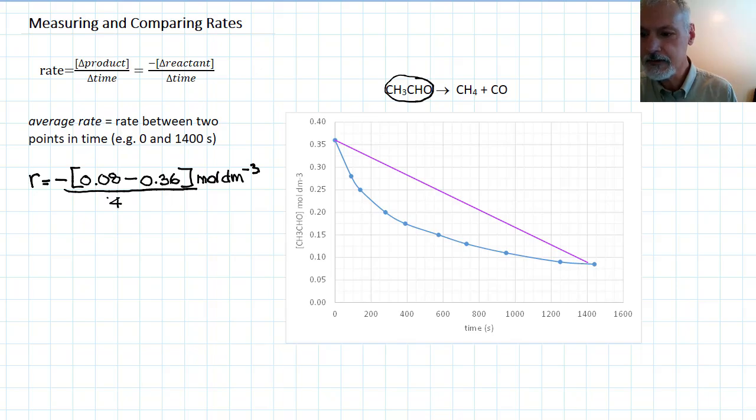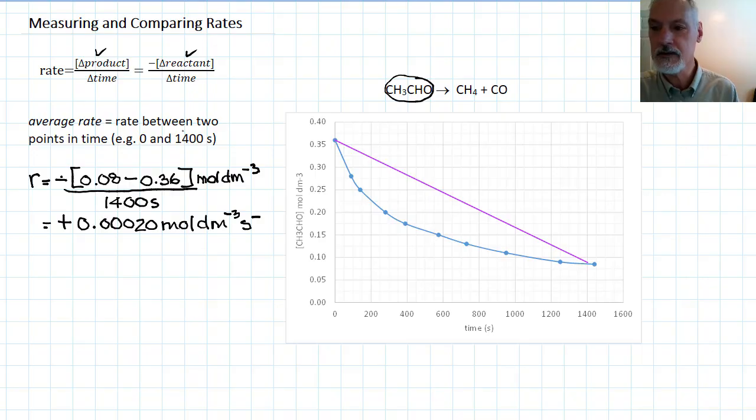which would be 400 seconds. So putting that through the calculator, I'll end up with a positive rate because of the two negative signs that I have there. And 0.00020 moles per decimeter cubed per second. Again, emphasizing, we end up with a positive rate. Whether we use this expression or this expression, the rate is usually expressed as a positive quantity. So that represents an average rate between these two points in time.